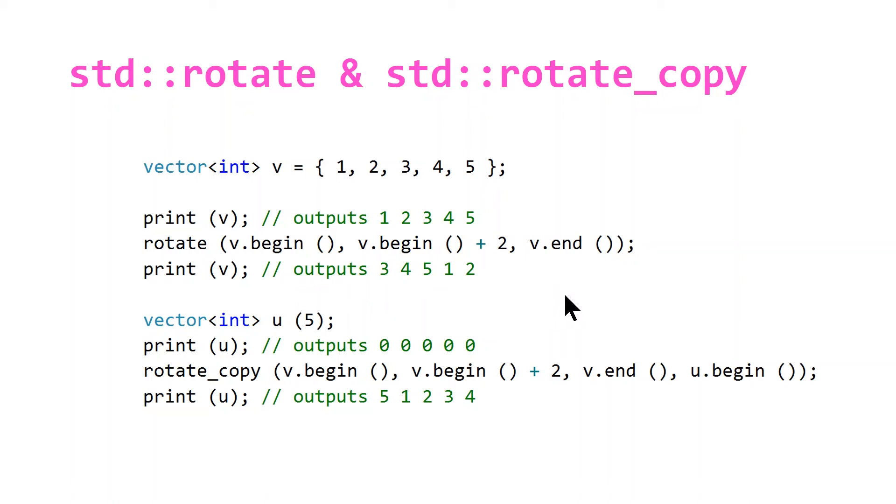And in the bottom here, similar to our last example, we're once again declaring a vector of integers, setting the integers to their default value of zero. So when we print out u at this point, it will just be five zeros.